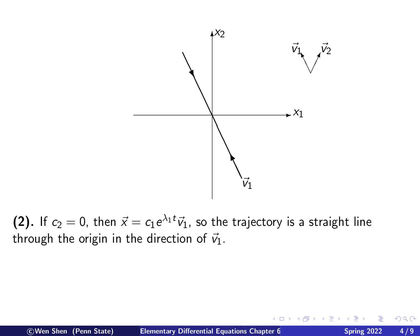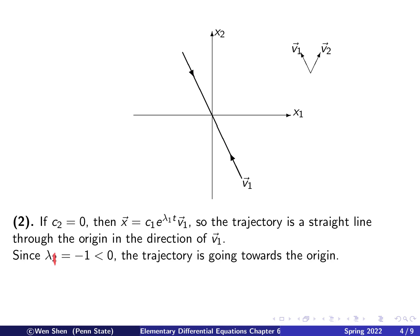For the second case, let c2 be zero. Then the solution is c1 * e^(lambda1 * t) * v1, a scalar multiple of v1. We can immediately conclude that the trajectories are straight lines through the origin in the direction of the first eigenvector. The direction of the arrows is determined by the sign of lambda 1. Since lambda 1 is less than zero, regardless of the sign of c1, as t goes to infinity this exponential decays to zero, so the solution approaches the origin. All arrows along this trajectory point towards the origin.